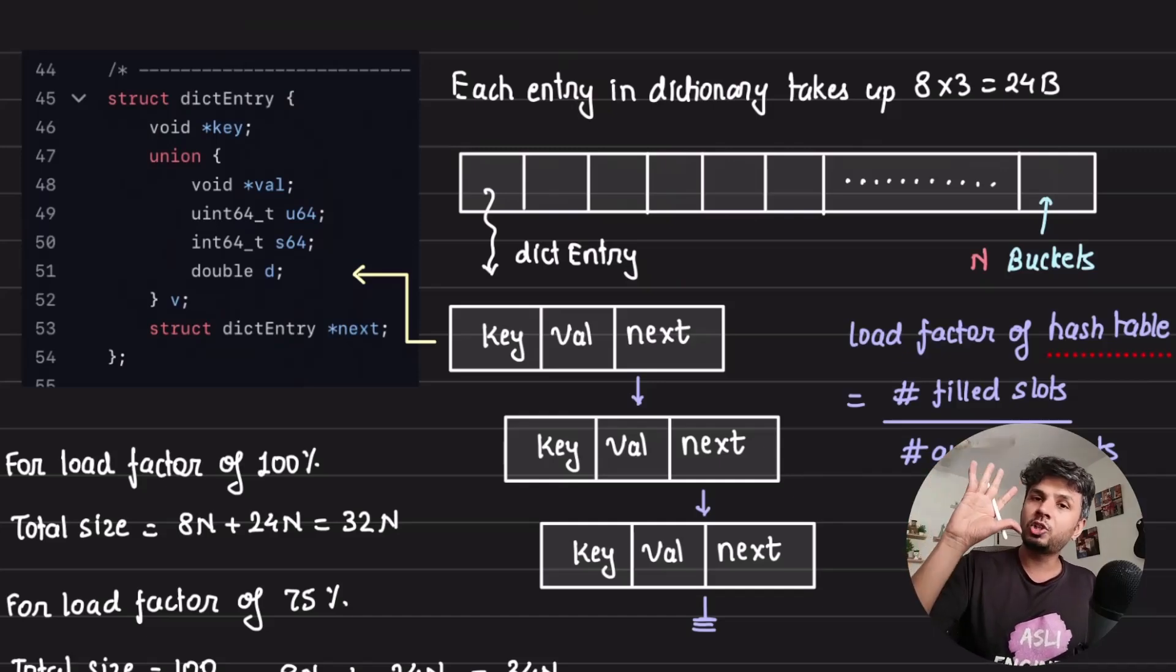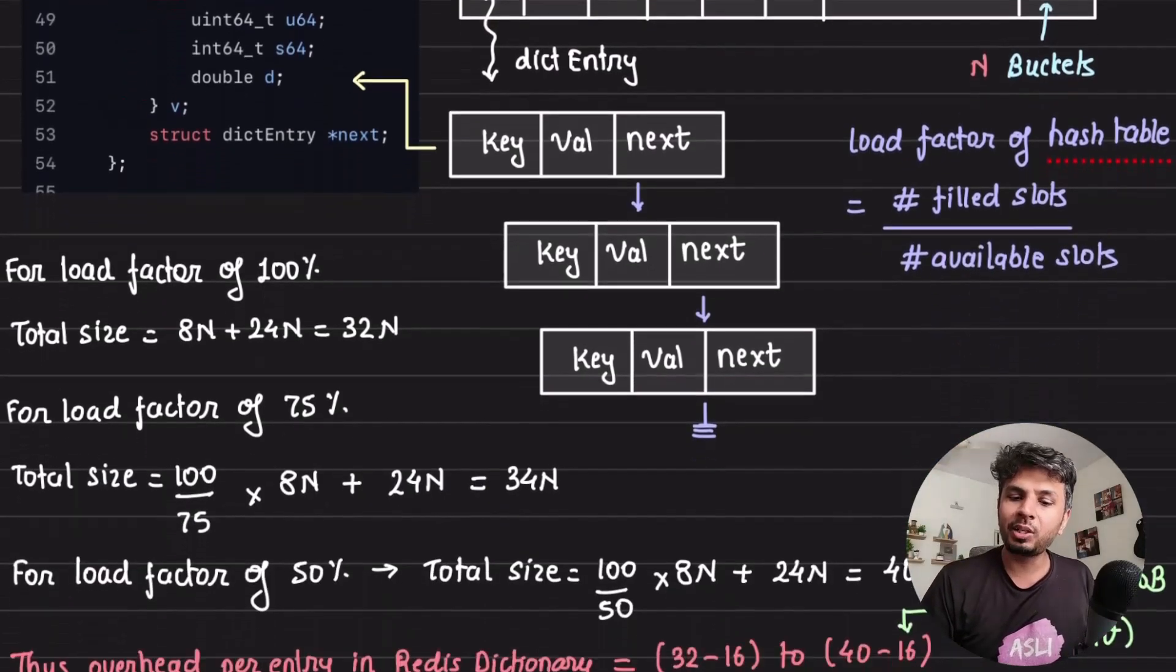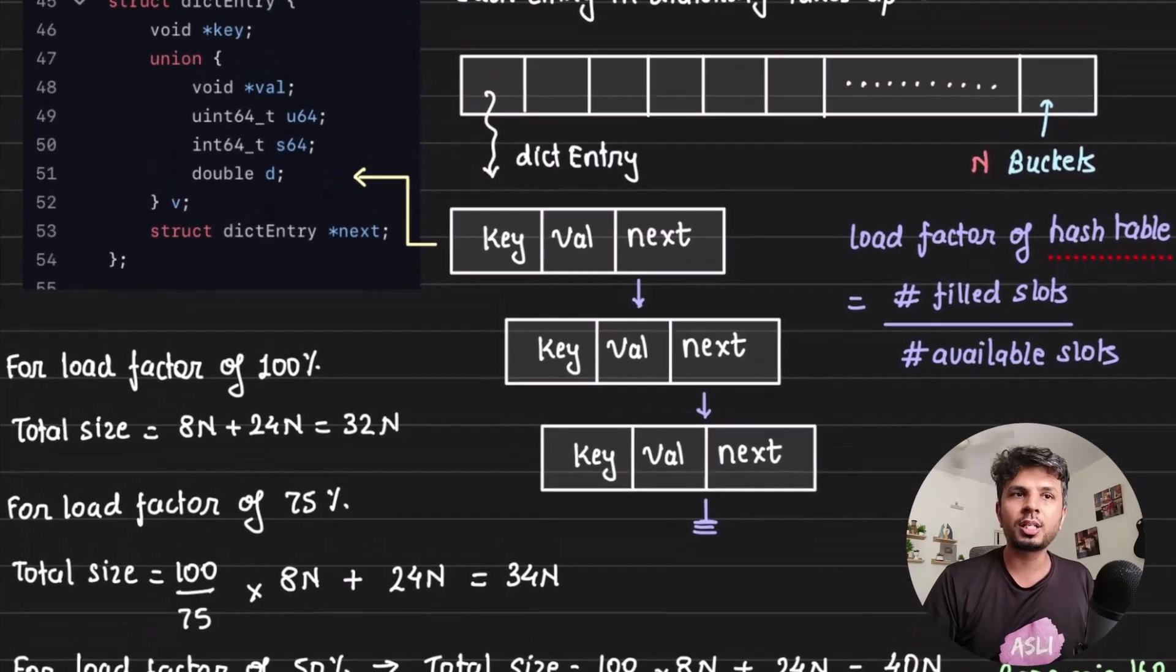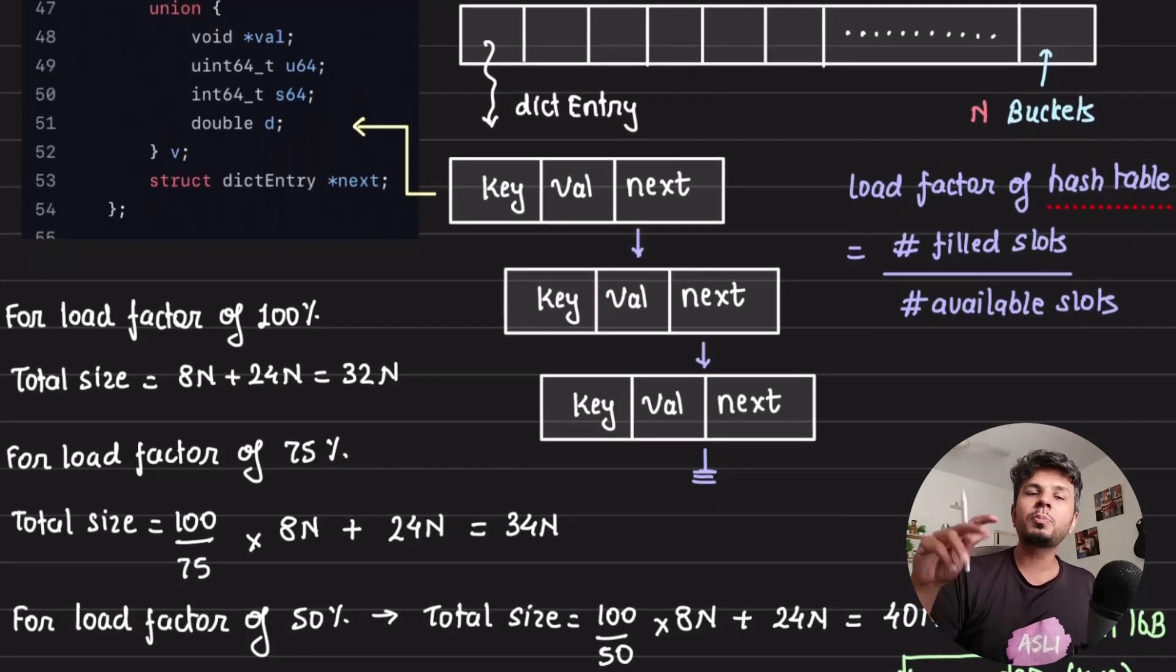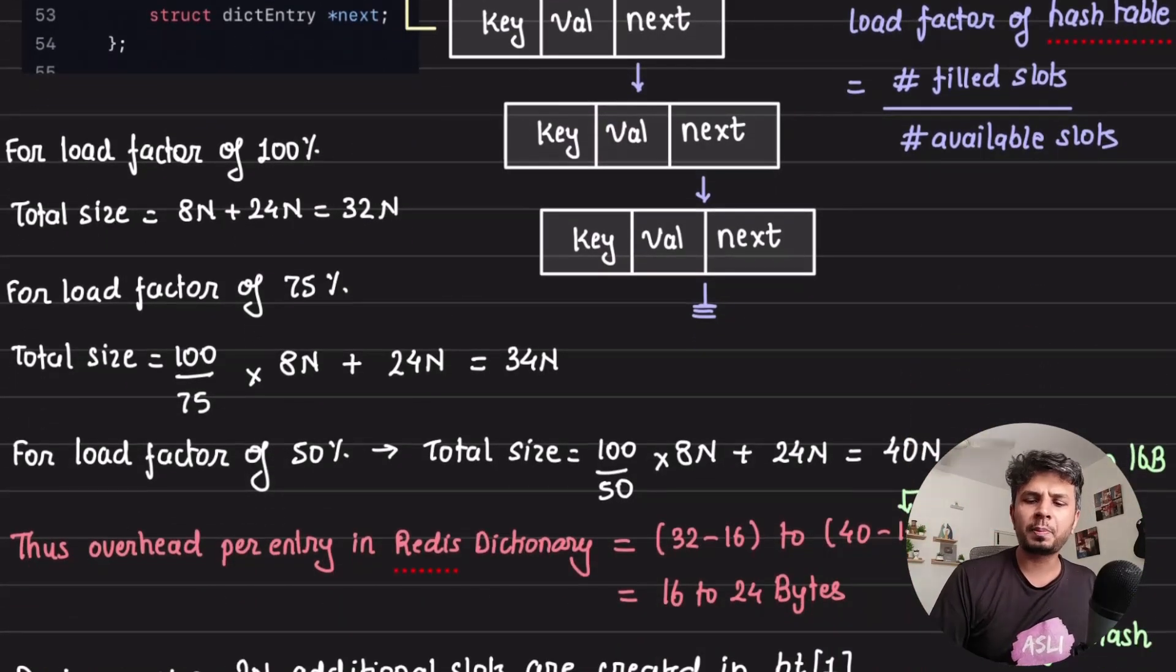If I compute, if I assume a load factor of 100, my total size would be 24n which is one for each dict entry for each n element, and then 8 byte pointer for n elements. So my total size would be 32n that I would require.